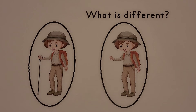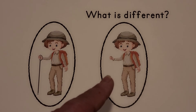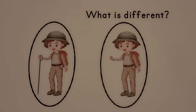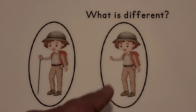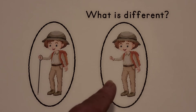Here we have a picture of a boy. What is different about this picture than this picture? If you said this picture doesn't have his walking stick, you're correct — it's missing. This walking stick is missing from the picture. That is what is different.